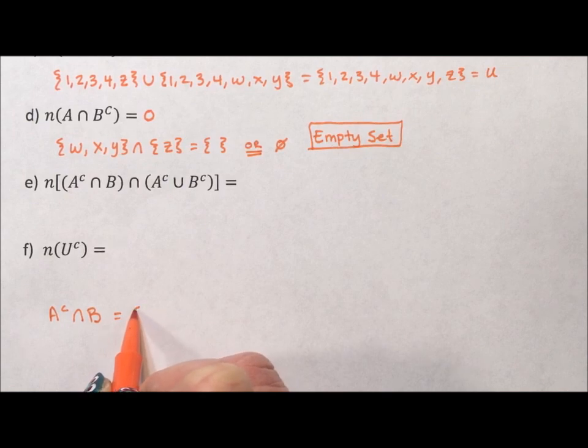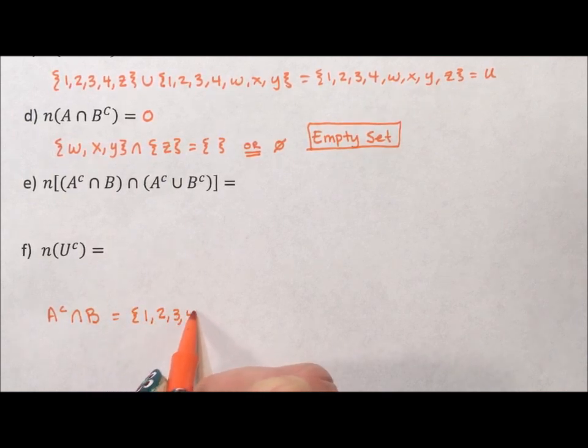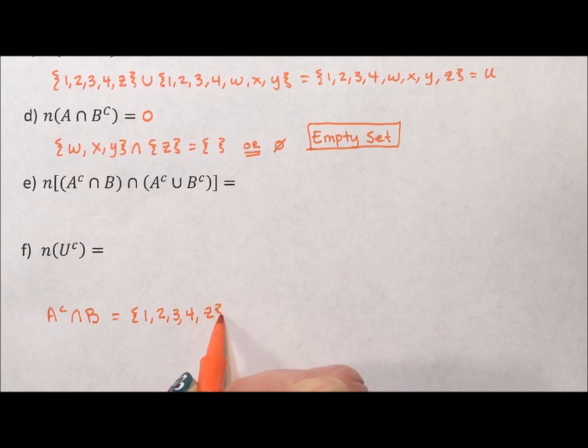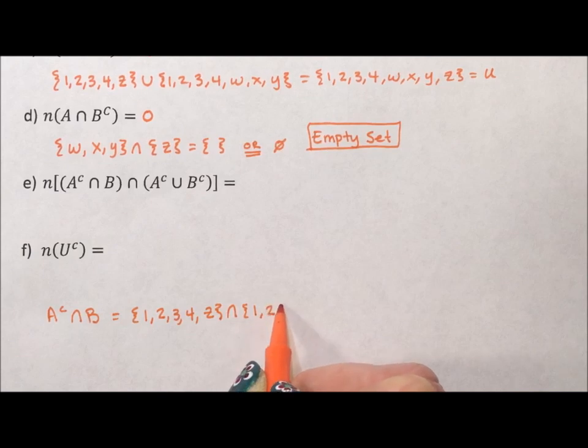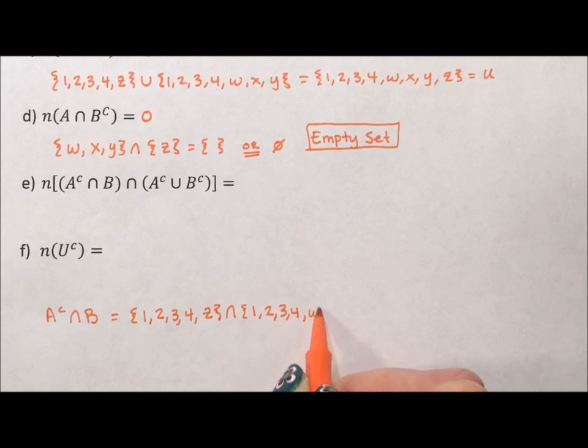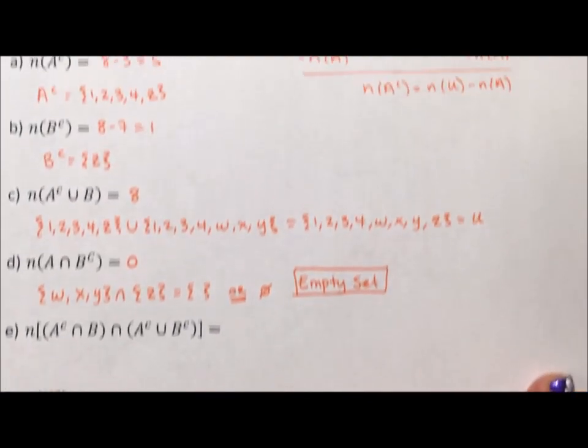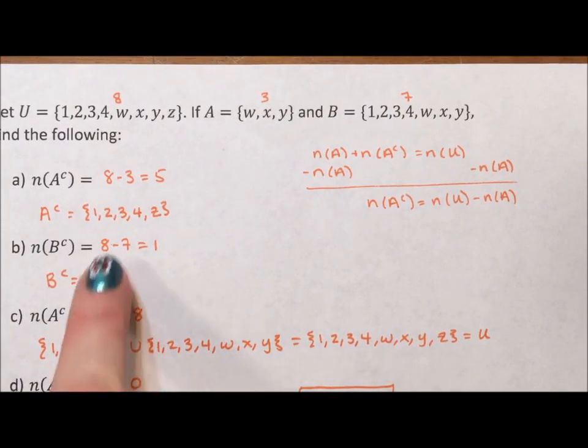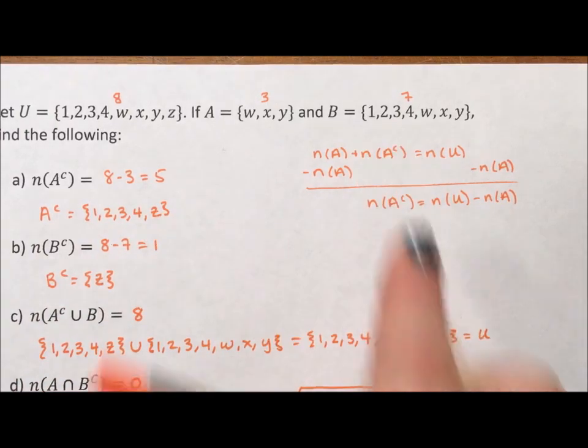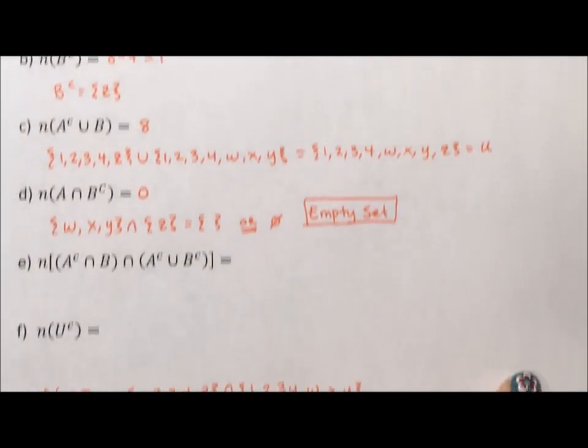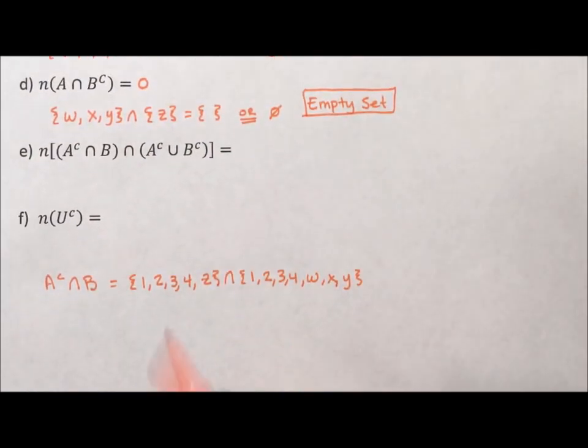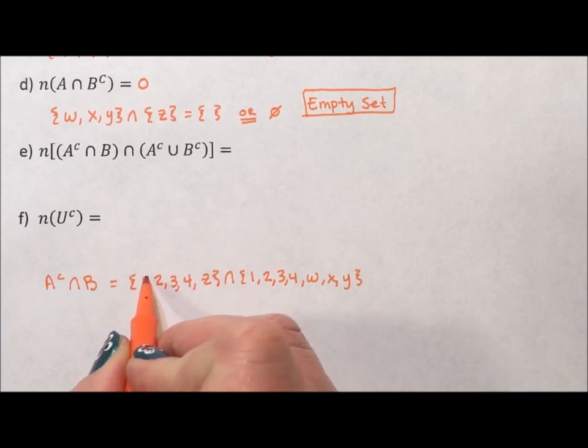Well, A complement we calculated to be 1, 2, 3, 4, Z up above. And we want the intersection of that with B. Well, B up above is 1, 2, 3, 4, W, X, Y. Again, I'm just pulling these from what we calculated up here. We have our A complement here. We have our B here. So, I'm just pulling it from what we have above. The intersection is what they have in common.